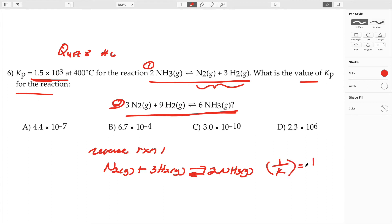That's going to be 1 divided by 1.5 times 10 to the 3. But I still see that the equations do not look similar. The coefficients are different.